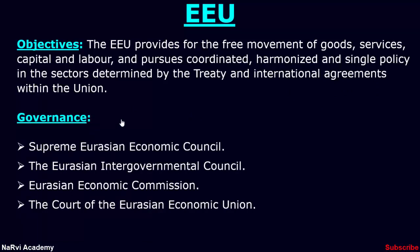There are four main parts of the governance of the organization. First is the Supreme Eurasian Economic Council, which is the supreme body of the union. It includes the heads of the member states and makes crucial decisions for the union. The Supreme Council determines the strategy, direction, and prospects of integration and takes decisions to achieve the goals of the union.